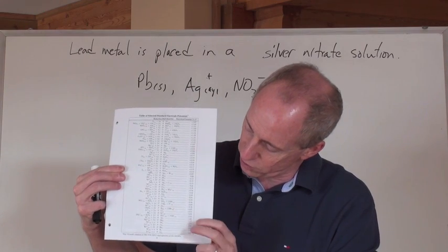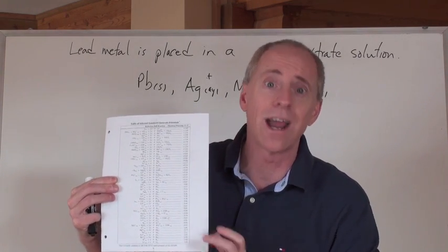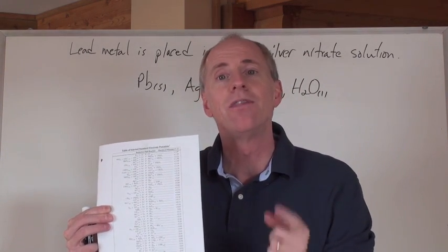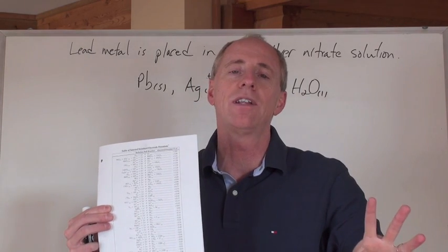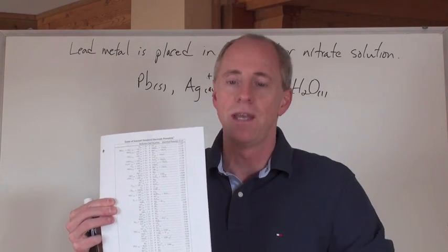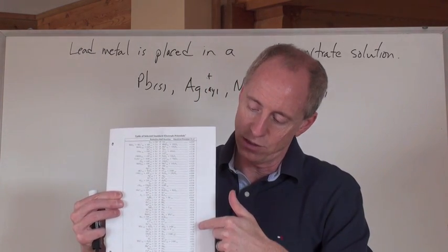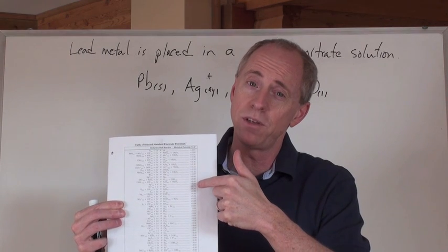So that means that the strongest reducing agent's on the bottom right-hand corner, and that's lithium metal. That's the one that wants to get rid of its electrons the most. And then, reducing agents actually get weaker as you go up this way.